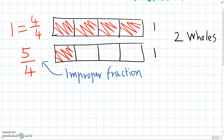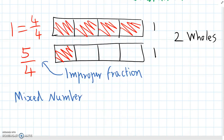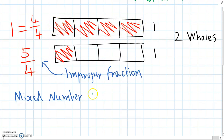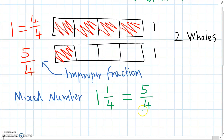With improper fractions there's another way that we can write them that means the same thing, and this is called a mixed number. For a mixed number, we need to think how many whole numbers do we have. Back at our example, we had one whole rectangle coloured in, so we have one whole. And how much extra do we have? We have one quarter extra. So one and one quarter — and that's equal to five quarters. So to convert from an improper fraction to a mixed number, we think how many wholes we have: four quarters equals one, and we had one quarter left over, so one and one quarter.